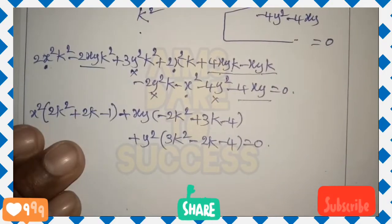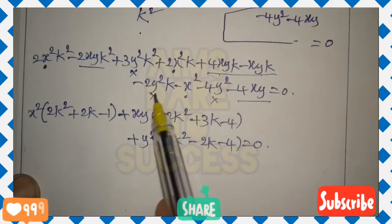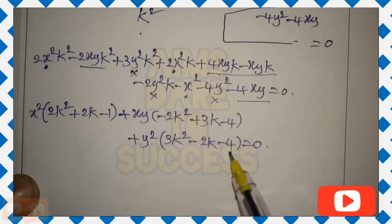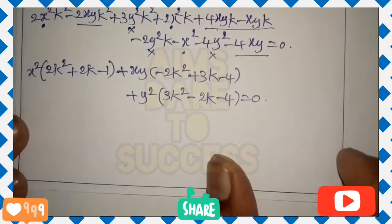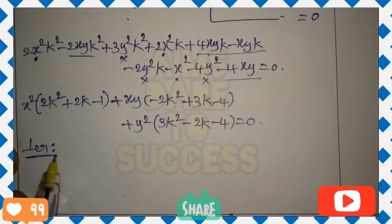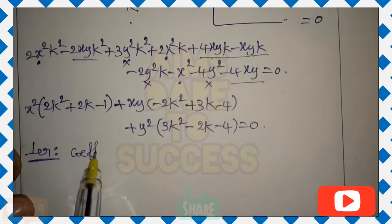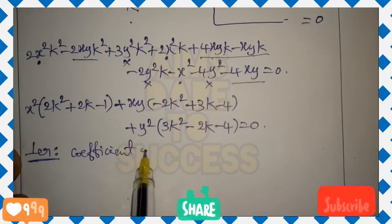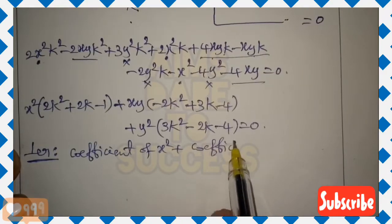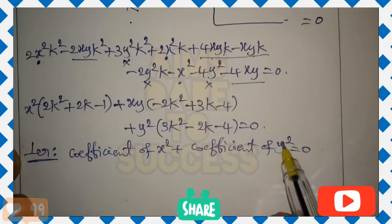According to the question, the lines are mutually perpendicular. The condition for mutually perpendicular lines is: coefficient of x² + coefficient of y² = 0. This is our formula — mutually perpendicular means coefficient of x² plus coefficient of y² equals 0.